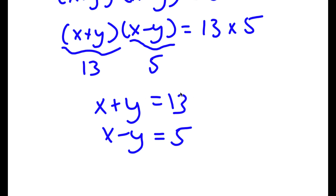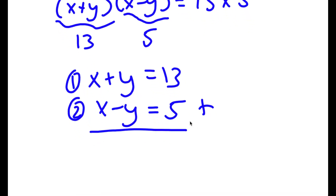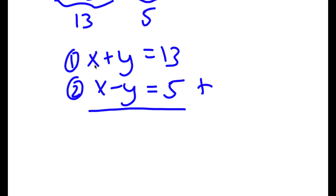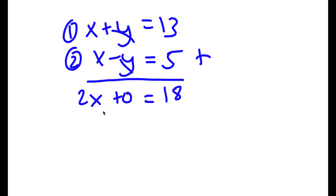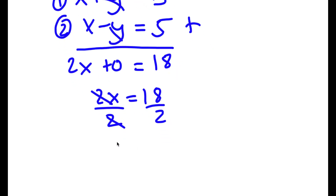Now we have a system of equations — equation one: x plus y equals 13, and equation two: x minus y equals 5. To find x and y, we add both equations. X plus x gives 2x, and y minus y cancels out, giving us 2x equals 13 plus 5, which is 18. Dividing both sides by 2, we get x equals 9.